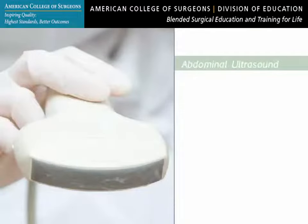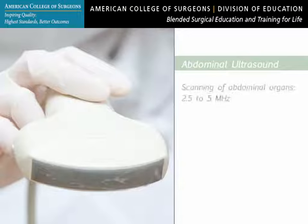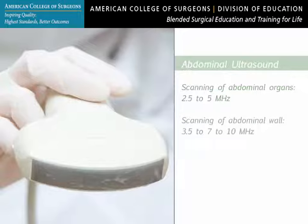Most abdominal ultrasound uses a low-frequency transducer. This can be with a curvilinear probe in the range of 2.5 to 5 MHz to provide a greater depth of field. On the other hand, examination of the abdominal wall can be performed with a high frequency in the range of 3.5 to 7 MHz.